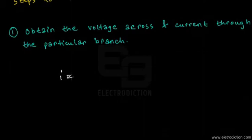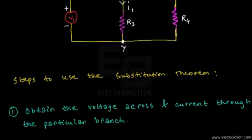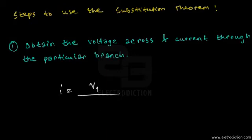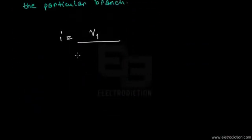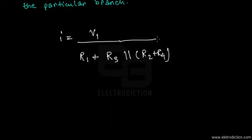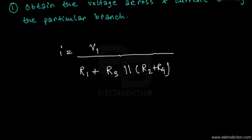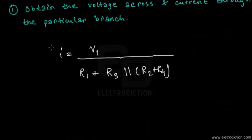To find current I, we look at the diagram: R1 is in series, and R2 and R3 are in parallel. I is obtained by dividing voltage source V1 by the entire resistance of the network — R1 in series with the parallel combination of R3 and the series combination of R2 and R4 across nodes X and Y.